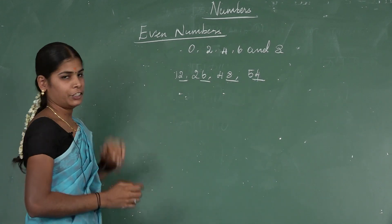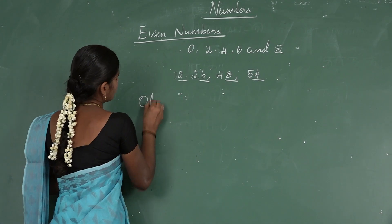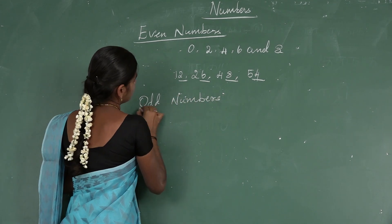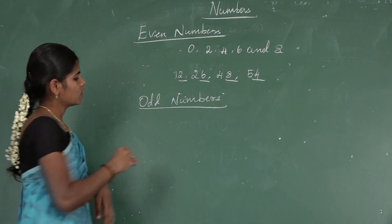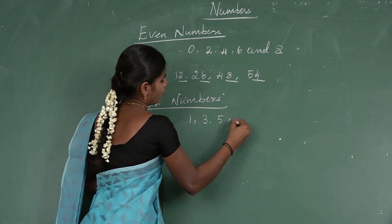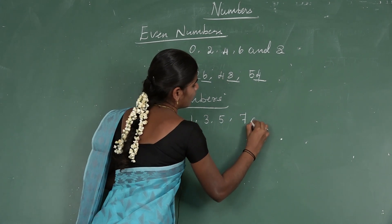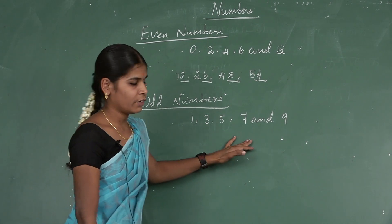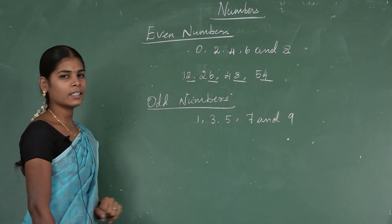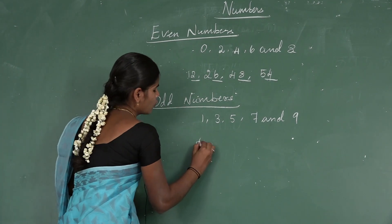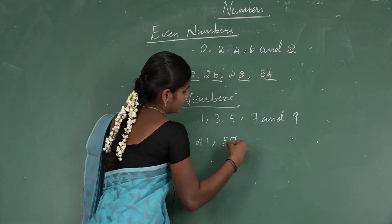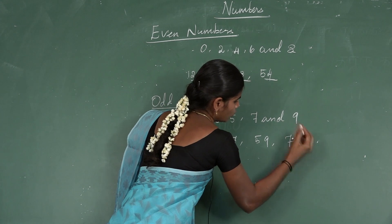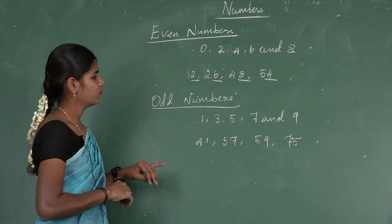The next type is odd numbers. Odd numbers are numbers ending with 1, 3, 5, 7, and 9. Numbers ending with 1, 3, 5, 7, or 9 are called odd numbers. For example, 41, 57, 59, 75 — these numbers are called odd numbers.